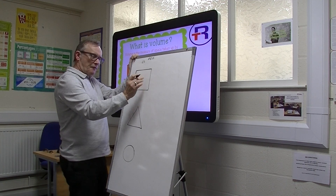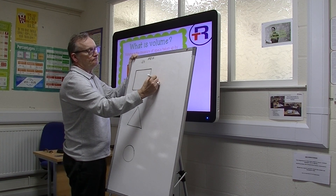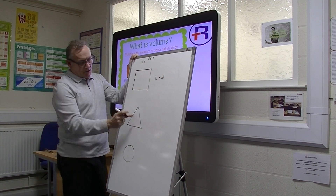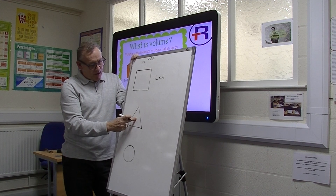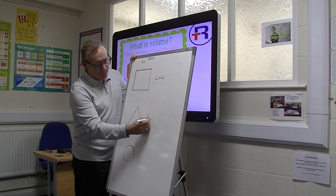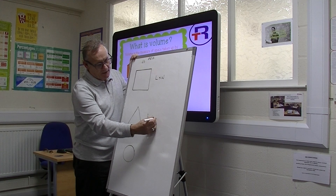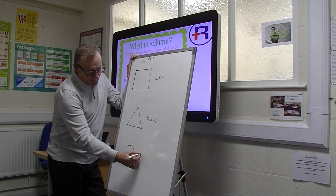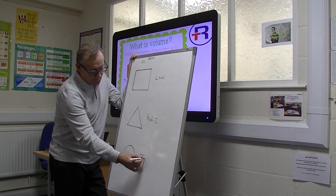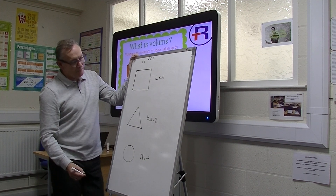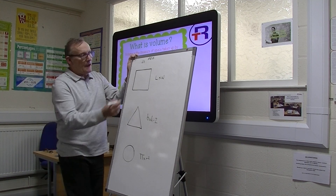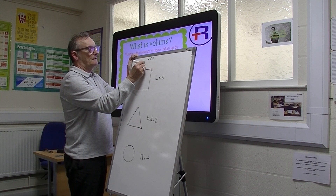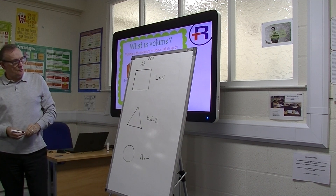Can we remember the formula to work out the area of a square or a rectangle? Length times width. To work out the area of a triangle it's the base times the height divided by 2. And to work out the area of a circle, it's pi times the radius squared. All the answers, whether in metres or centimetres, are written as centimetres squared.